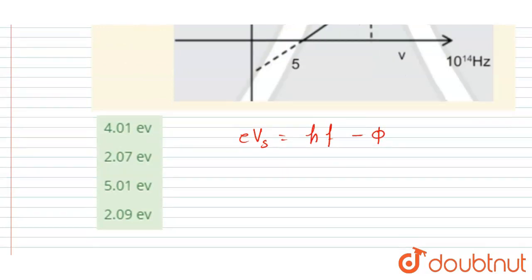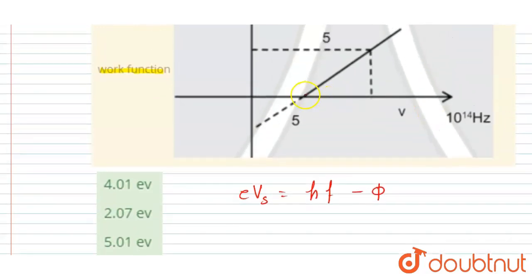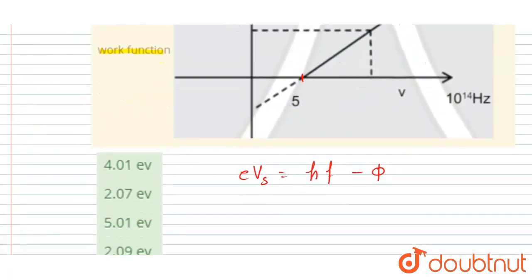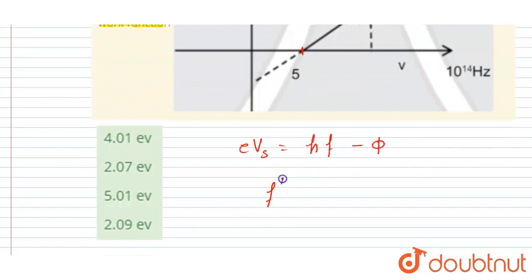So here you can see when the stopping potential is zero, the frequency is 5 into 10 to the power 14 hertz. So I will write at f equals to 5×10^14 hertz, the stopping potential is equals to zero, right?